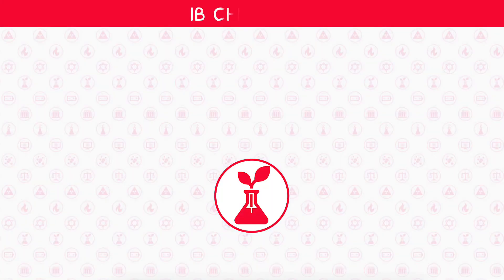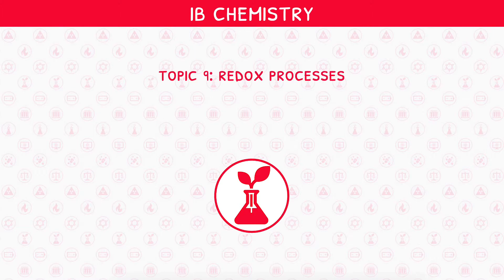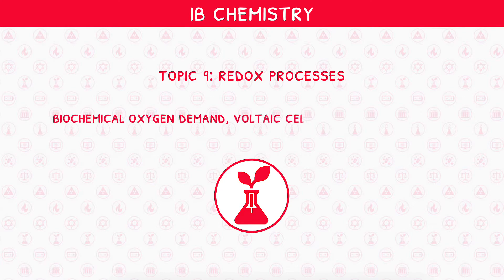Welcome back to our IB Chemistry video series. This is the second and final video in IB Chemistry topic 9, Redox Processes, where we will be looking at biochemical oxygen demand, voltaic cells and electrolytic cells.